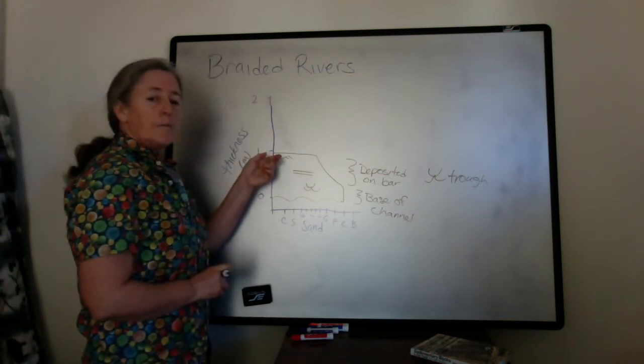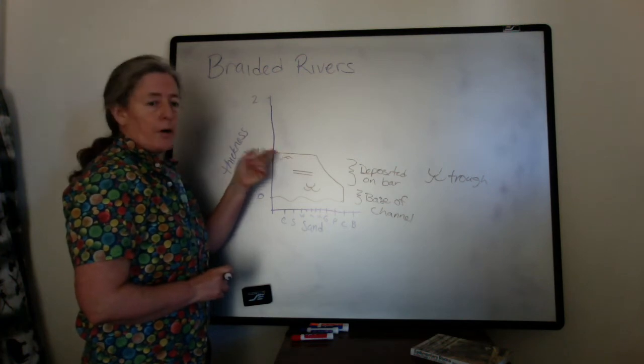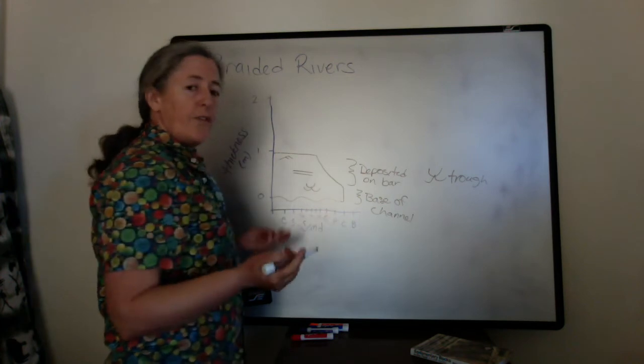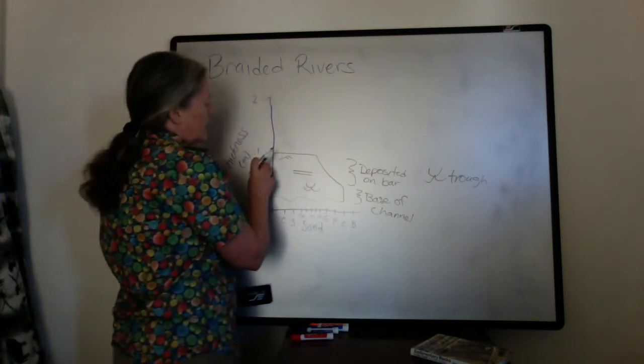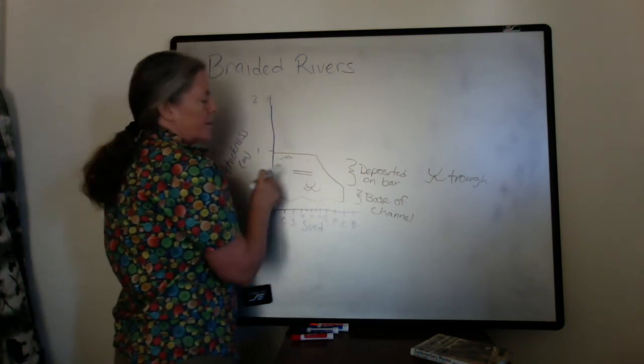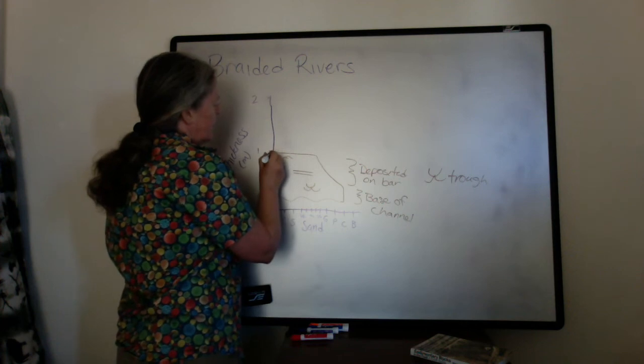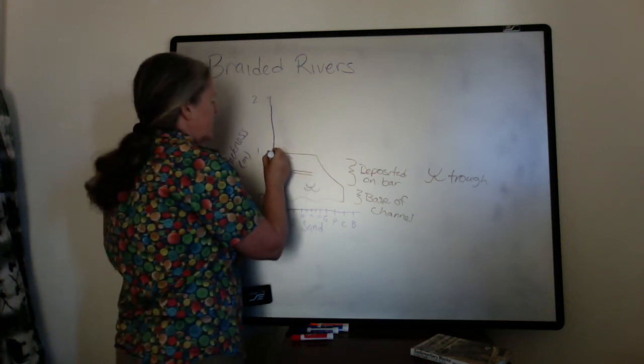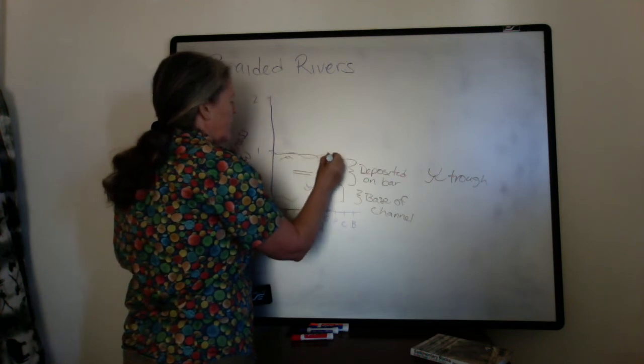And so then at some point, the top of the bar might be exposed a little bit. And then the next flood comes and the flow speed might be fast enough that this gets eroded. Or it could be that just another channel migrates into this area and this will end up eroded.